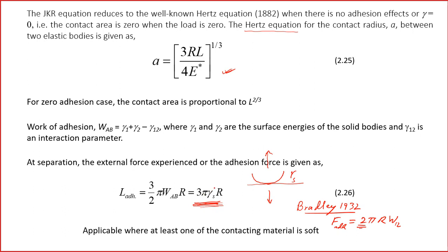There is a slight difference between Bradley's equation and the JKR model: if we convert gamma_s to w_ab over 2, the JKR factor becomes 1.5, while Bradley's equation uses a factor of 2. Both lead to essentially the same form. We also understood that w_ab, the work of adhesion, equals gamma_1 plus gamma_2 minus gamma_12 - the surface energies of the two solids minus the interfacial energy. This is also known as the Dupré equation.